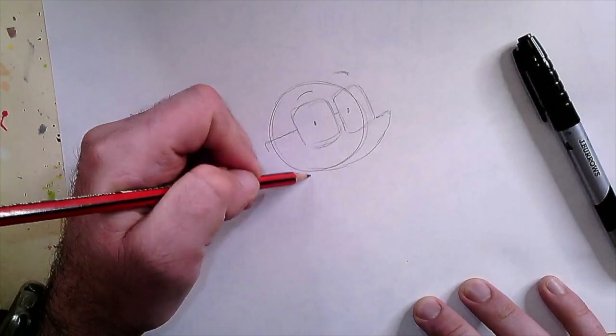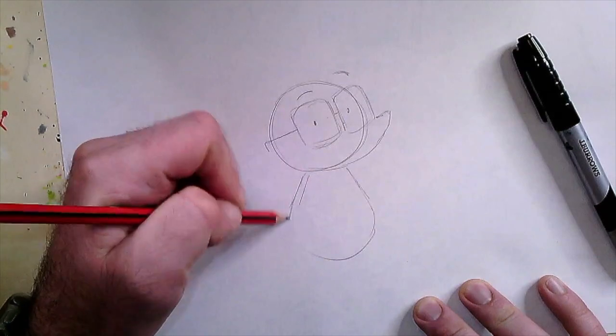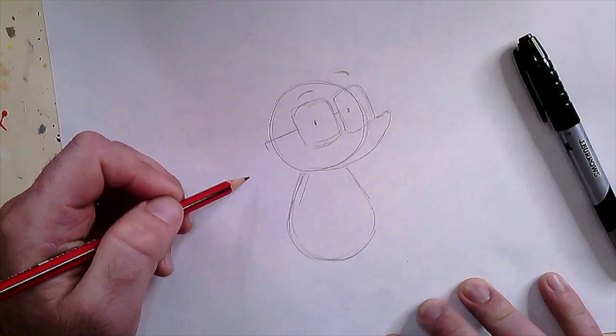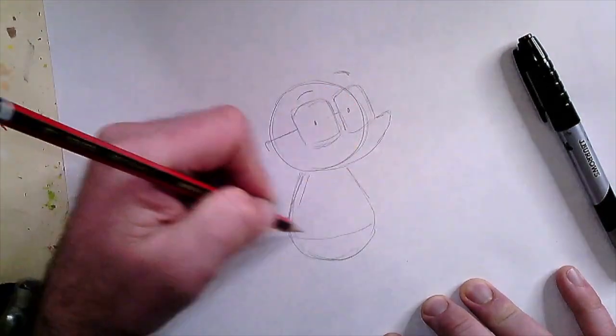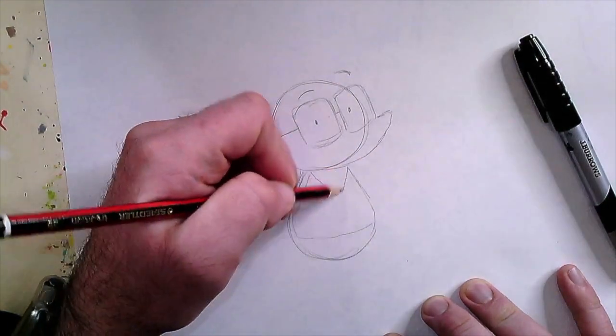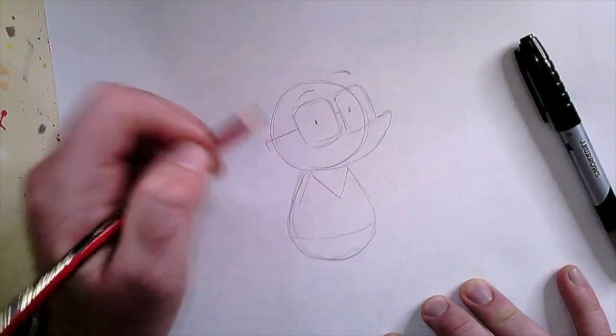We're going to put a pear-shaped body on here, about that big. I'm going to rule a guideline here for where the bottom of his coat will be, and we're going to put a V-shape in here for where the lapels will go.